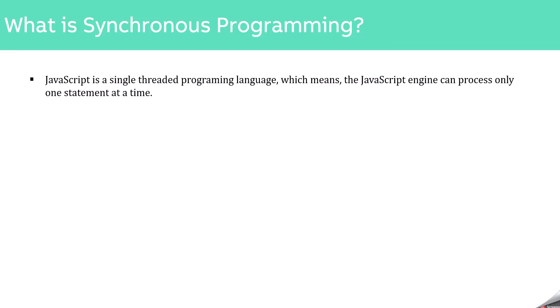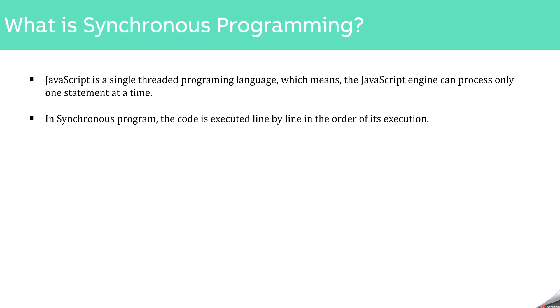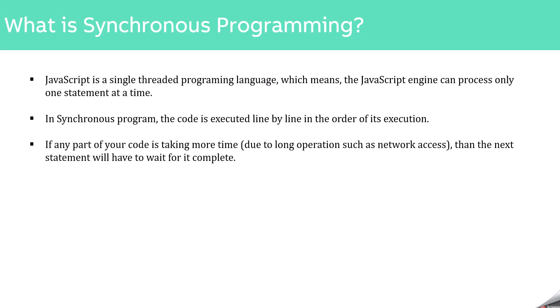JavaScript is a single-threaded programming language, which means the JavaScript engine can process or execute only one statement at a time. In a synchronous program, the code is executed line by line in the order of its execution. And if any part of your code is taking long time in its execution, for example due to long-running operations such as network access, then the next statement will have to wait for its execution to complete.